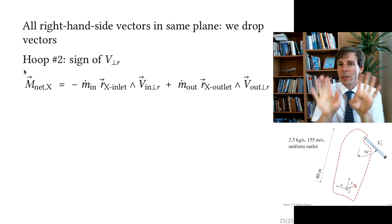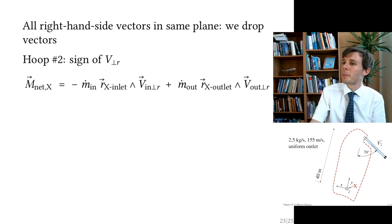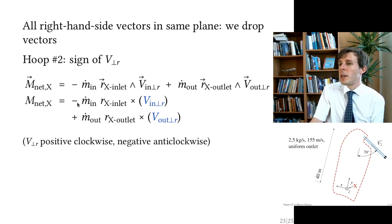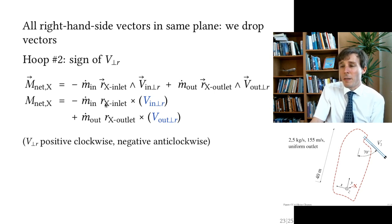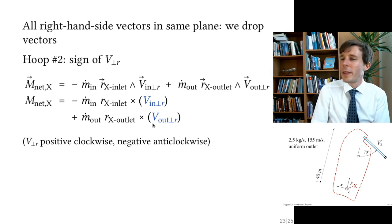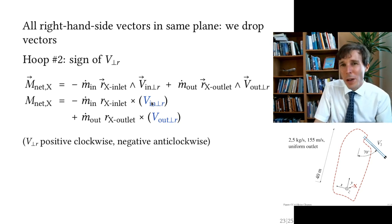Since all moment vectors are aligned, we can work with scalar magnitudes. The magnitude of M_net about point X equals: minus ṁ times the inlet radius times the component of incoming velocity perpendicular to that radius — and the same form for the outlet.